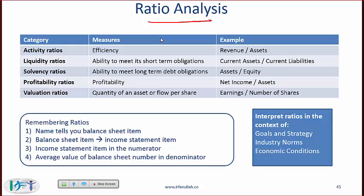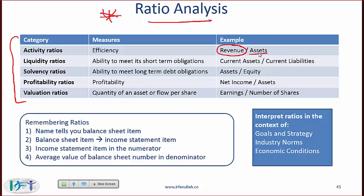Ratio analysis is extremely important. We have ratios at the end of the earlier readings and lots of ratios consolidated here. These are the broad categories of ratios. Activity ratios measure the efficiency of a company — the numerator is something from the income statement and the denominator is a number from the balance sheet. An example of an activity ratio is revenue divided by assets.